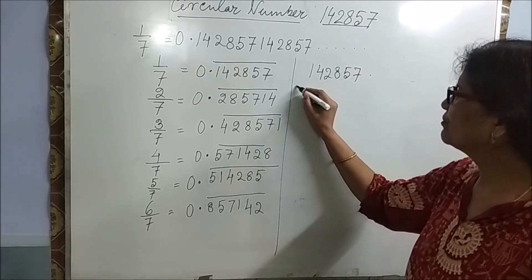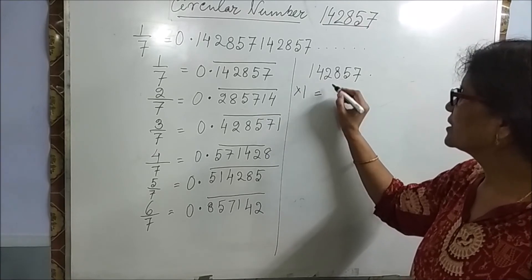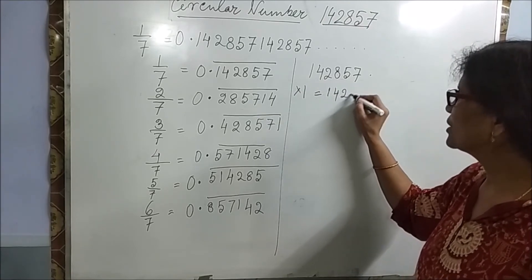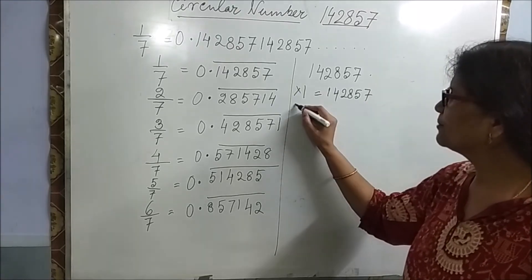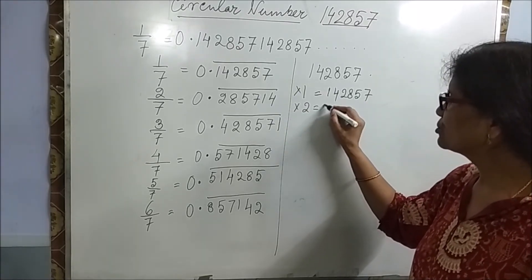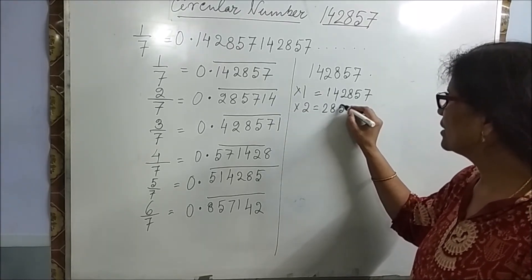It will multiply by 1. You will get 142857. It will multiply by 2. You will get 285714.